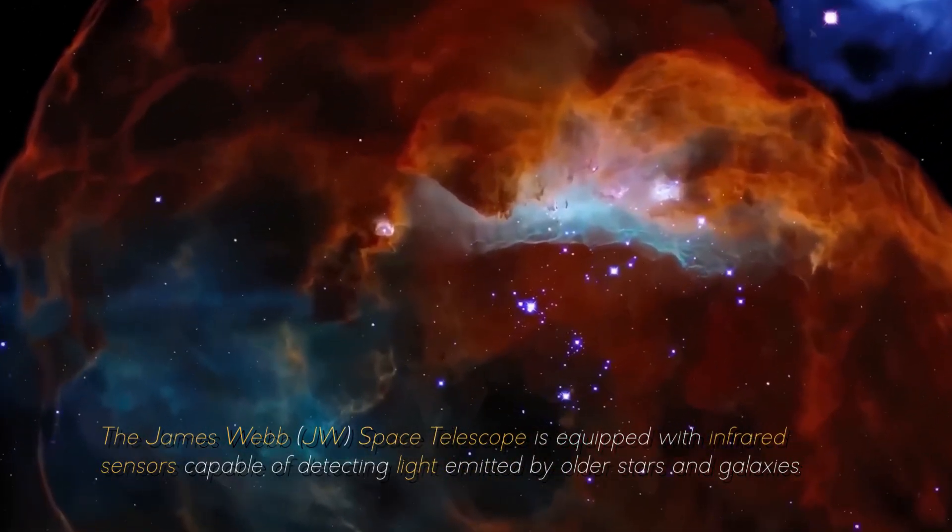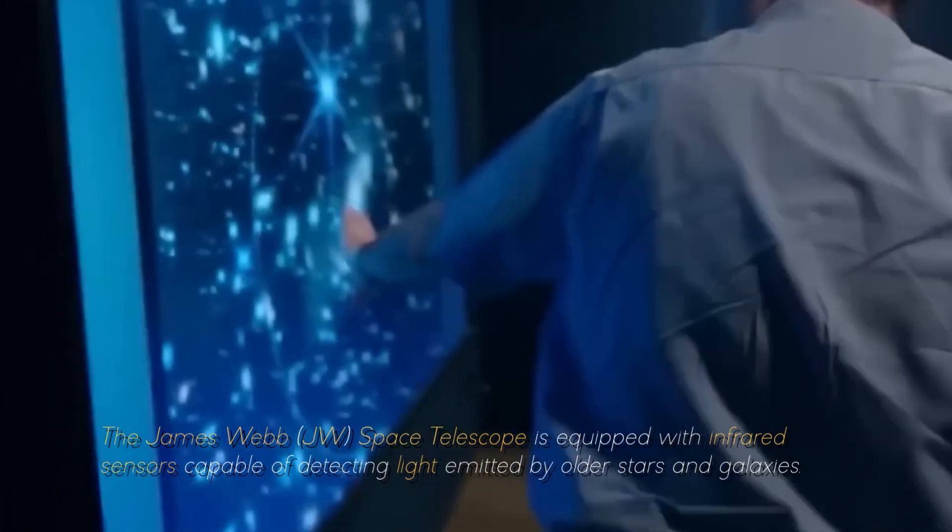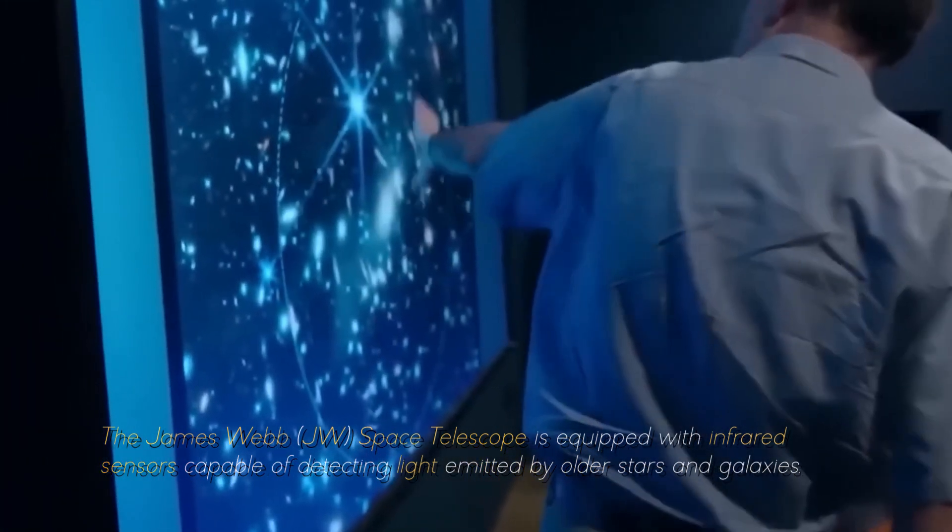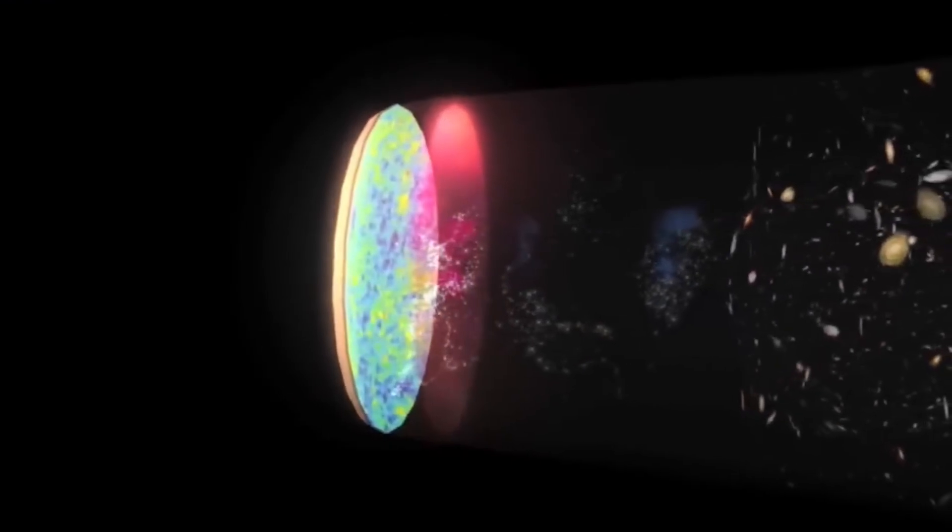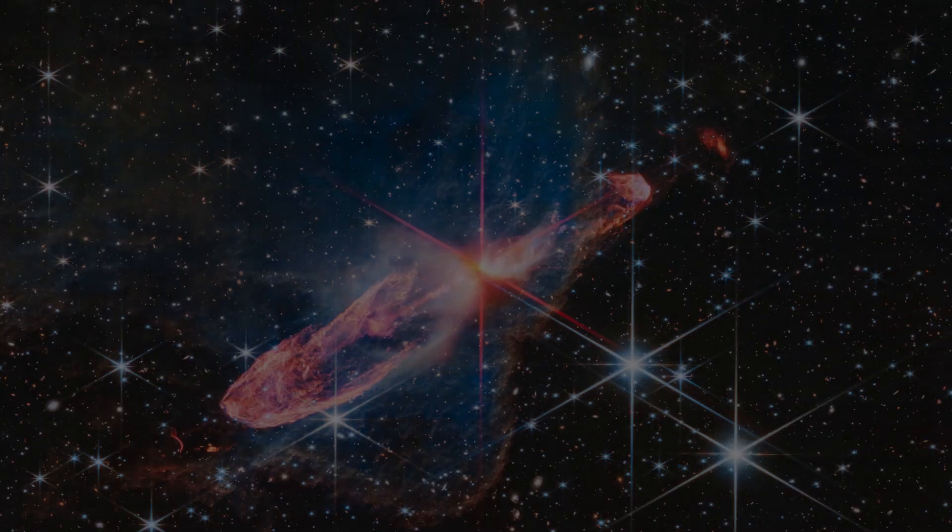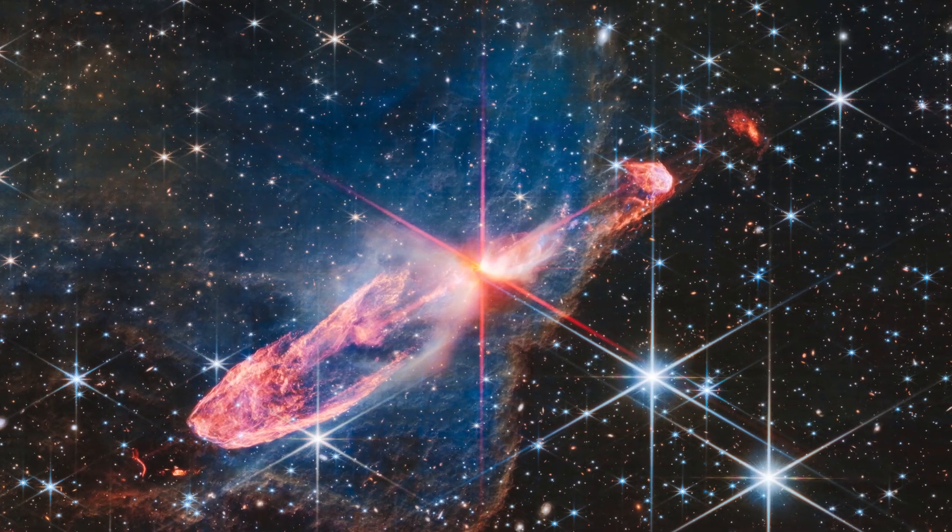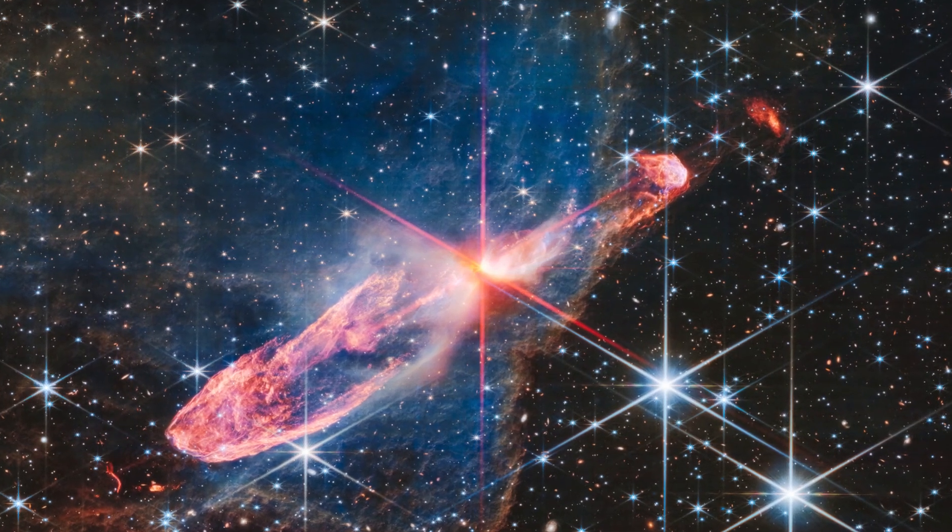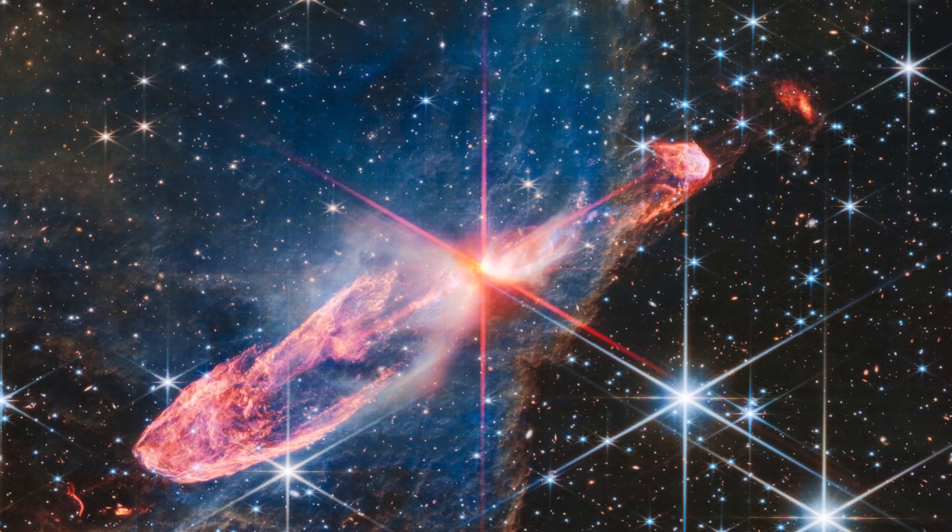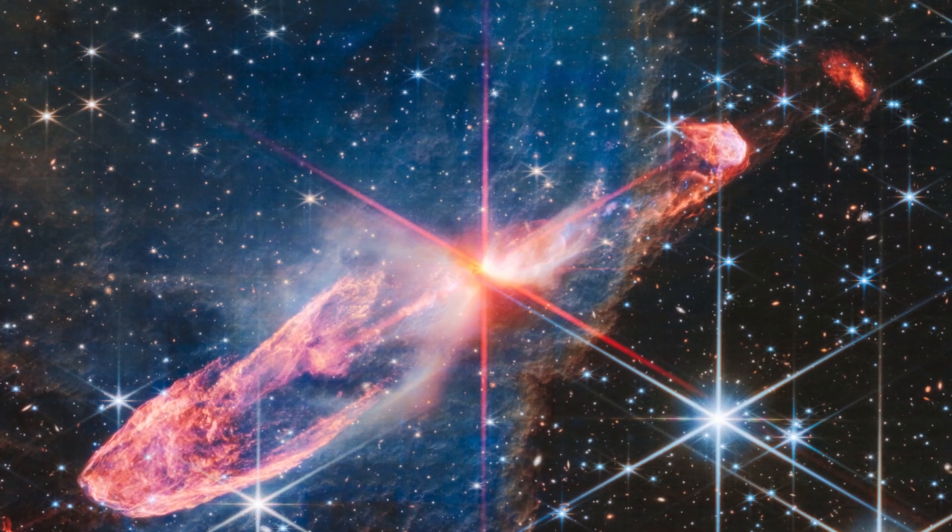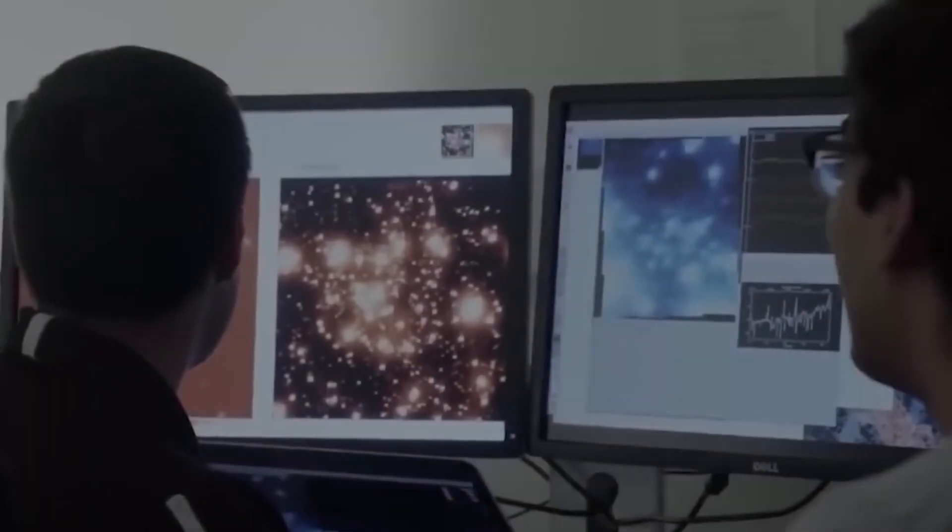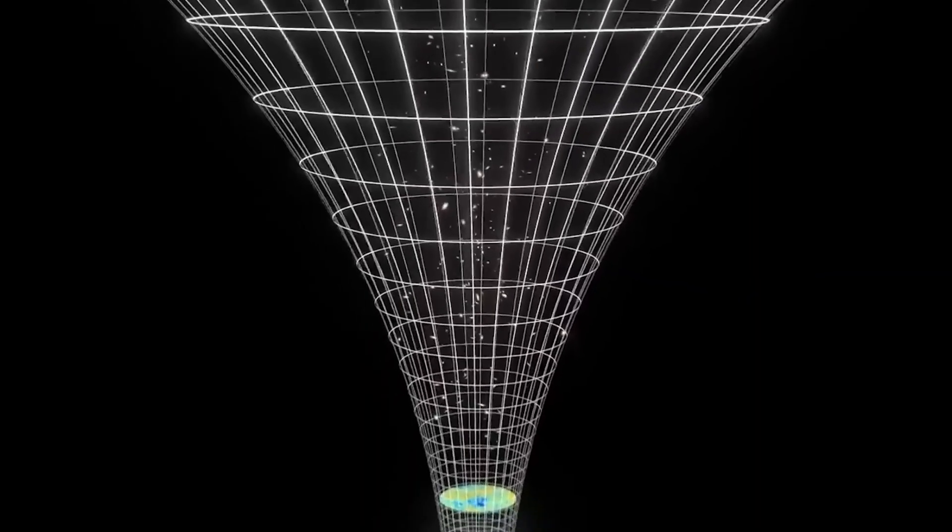The James Webb Space Telescope is equipped with infrared sensors capable of detecting light emitted by older stars and galaxies. This allows astronomers to go back in time, almost 13.5 billion years, to the beginning of the known universe. Prior to this discovery, scientists had detected numerous galaxies in the oldest regions of the universe approximately 350 million years after the Big Bang using data collected by the JWST. These distant stellar systems were small and in agreement with the predictions of current cosmological models.